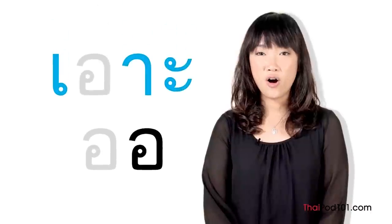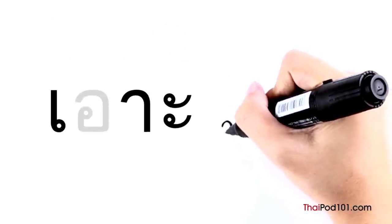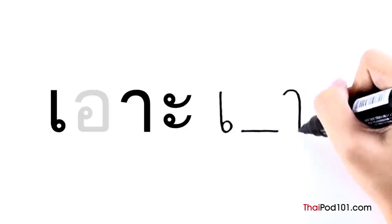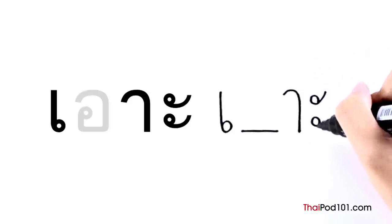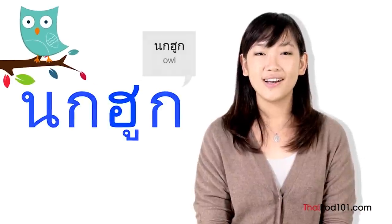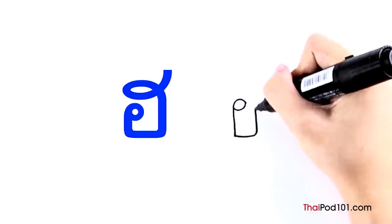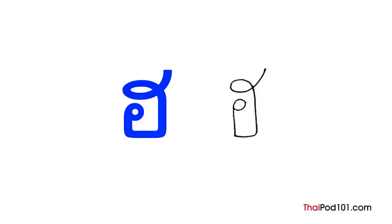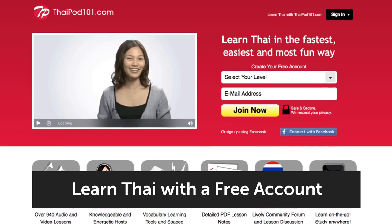There is a short version of SARA O called SARA O. SARA O is written with SARA E in front of the consonant, then SARA A after the consonant. HO NOKKUK — do you know which animal it is named after? NOKKUK is Thai for 'owl.' HO NOKKUK makes an H sound just like the H in 'hoot.' Start with the head, curl around to the top, and add a loop.